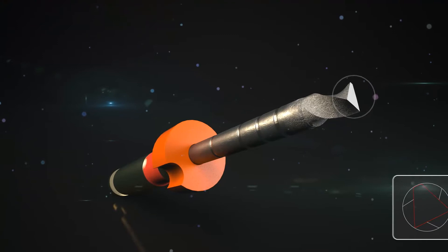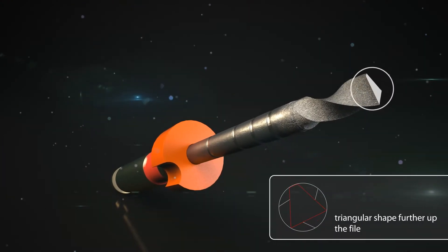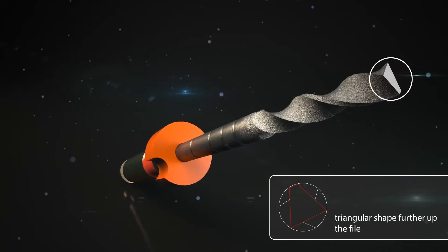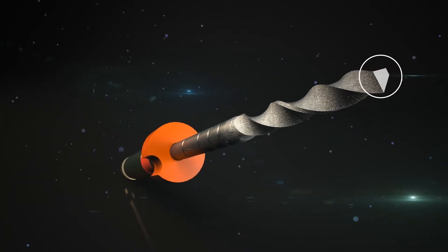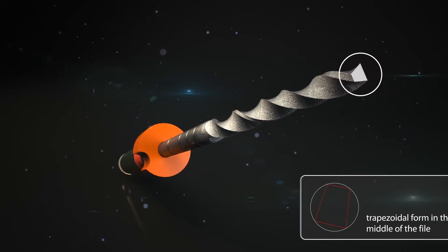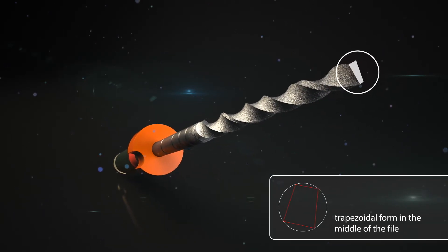The innovative EDM process enables the internal cross-section of the file to vary extraordinarily. The almost triangular cross-section at the lower end of the HyFlex EDM file changes to a trapezoidal form until it approaches an almost rectangular cross-section at the tip.